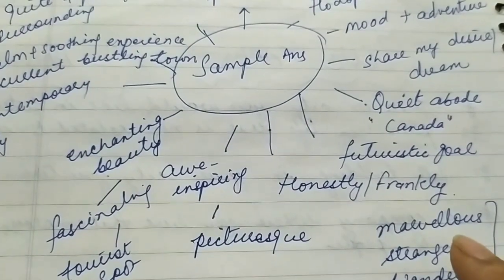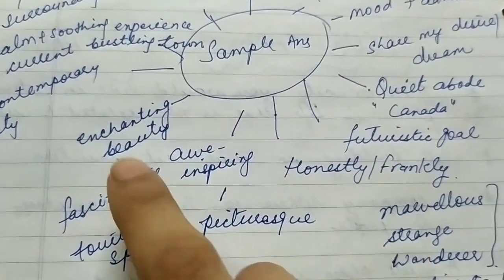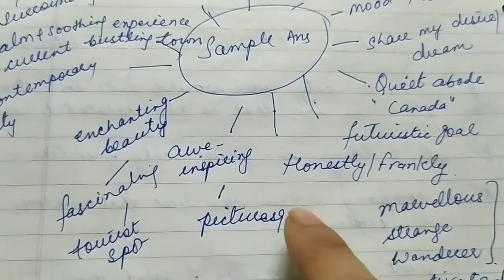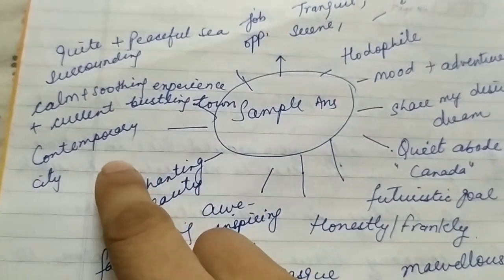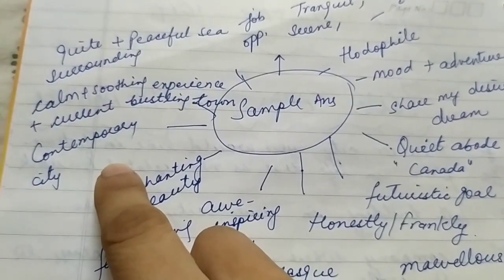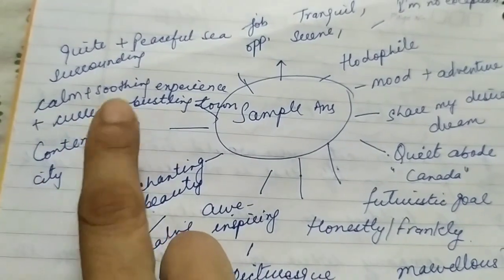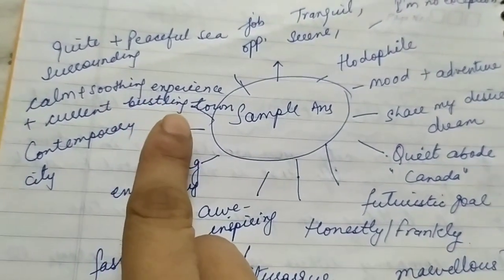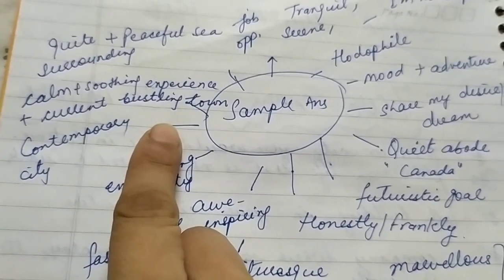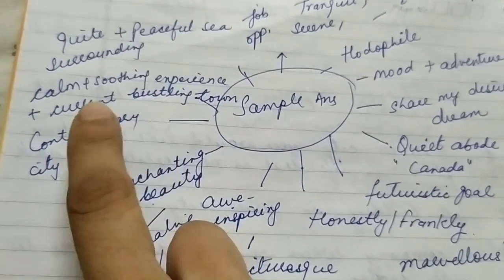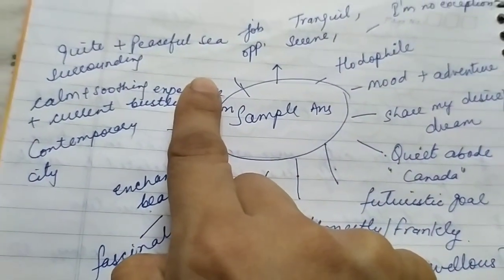Now, what are the vocabulary words which you can use? Jaisa ki awe-inspiring place hai, fascinating hai, tourist spot hai, picturesque hai, enchanting beauty hai wahaan ki. Toh contemporary city hai, modern city hai, ya traditional city hai, historic city hai, ancient hai, aur yeh calm place hai, soothing experience tha aapka. Abhi aap currently kahan pe reh rahe ho — hustle and bustle rehta hai, hamesha bustling town hai, aur wahaan pe hamesha traffic rehta hai, lekin abhi jahaan pe reh gaye ho, that is a quiet place, peaceful sea hai aas paas.